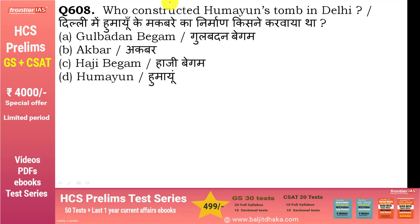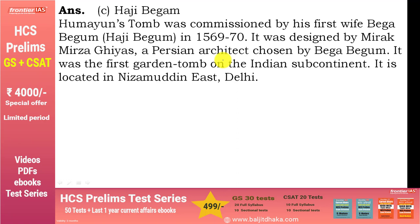Who constructed Humayun's tomb in Delhi? दिल्ली में हुमायूँ के मकबरे का निर्माण Haji Begum ने करवाया था। Gulbadan Begum उनकी sister थीं लेकिन उन्होंने नहीं करवाया। Akbar ने भी नहीं करवाया था। Haji Begum, जिनका असली नाम Bega Begum था, Humayun की first wife थीं। यह Indian subcontinent का पहला garden tomb है और Nizamuddin East Delhi में located है।